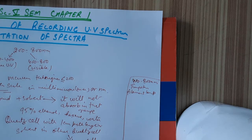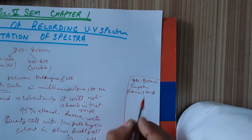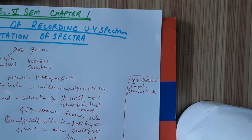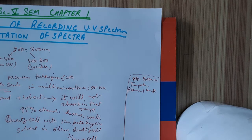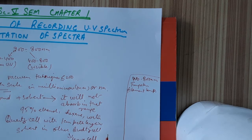The spectrometer will compare the amount of radiation transmitted through the sample with the reference cell, and will measure the amount of radiation absorbed by the study material at different wavelengths. This is recorded in the form of a plot of wavelength versus absorbance.